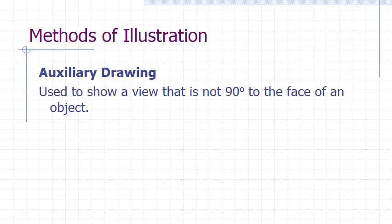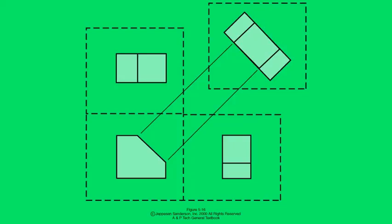Some orthographic projections require an auxiliary view to show all of the necessary detail. Here is an example of what an auxiliary view might look like.